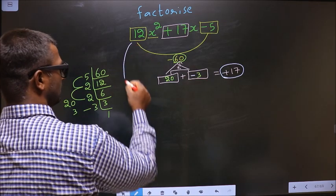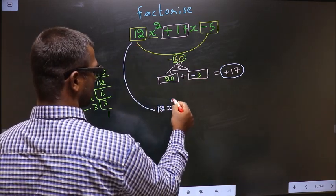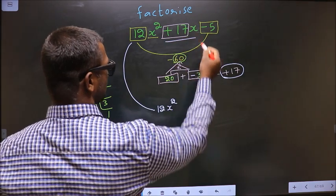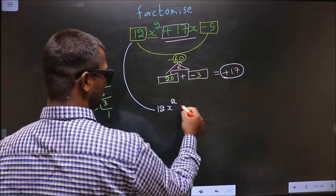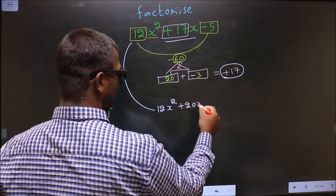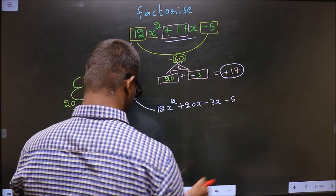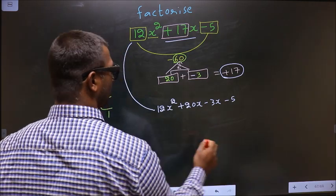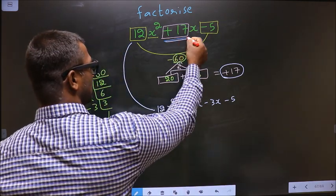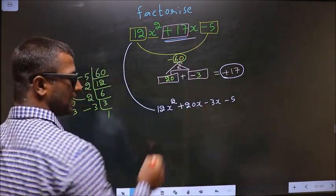Now you change this: 12x square. In place of plus 17x now you write this: plus 20x minus 3x minus 5. Did you understand? In place of plus 17x I have written this.